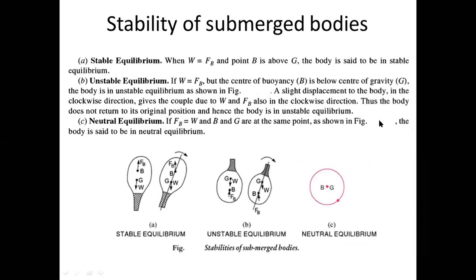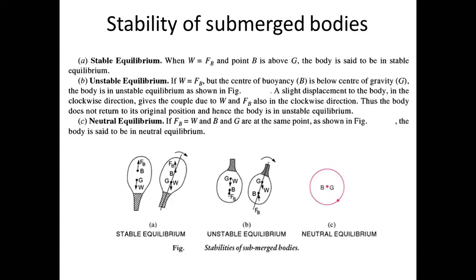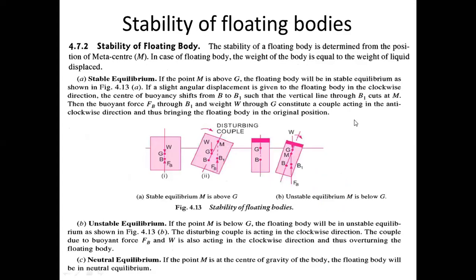The same points are summarized on this slide: for stable equilibrium, B should be above G; for unstable equilibrium, B should be below G; and for neutral equilibrium, B and G should be at the same point. Now, the next topic we need to study is the stability of the floating body — like a ship floating over the surface of a liquid. The stability of a floating body is determined from the position of the metacenter.